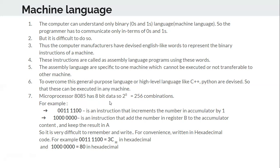The microprocessor 8085 has 8-bit data. There is a basic microprocessor by Intel Corporation called the Intel 8085. It stores 8-bit data — in main memory, it can store 8-bit data per line. If you say 2 to the power of 8, that gives 256 combinations, so that much address space can be there.